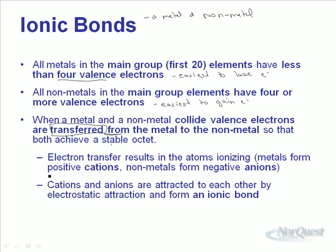When this happens, the positive ions are called cations. Non-metals go on to form anions because they're negative. Now that we have these charged particles, they end up being attracted to each other. That attraction between the positively charged ion and the negatively charged ion is called an ionic bond. The net charge of the compound is zero.